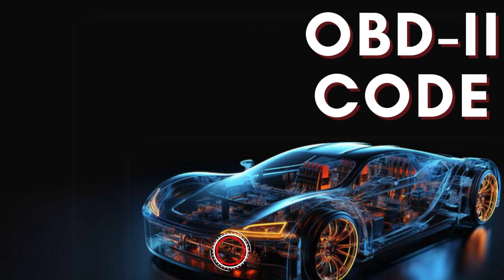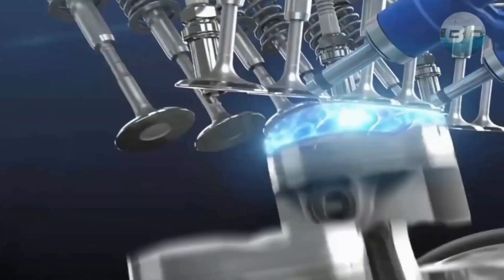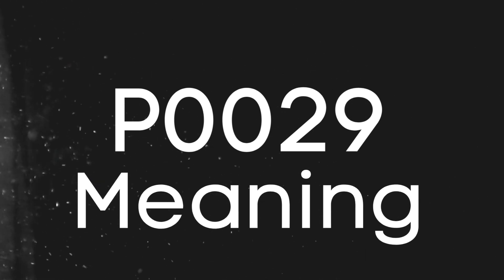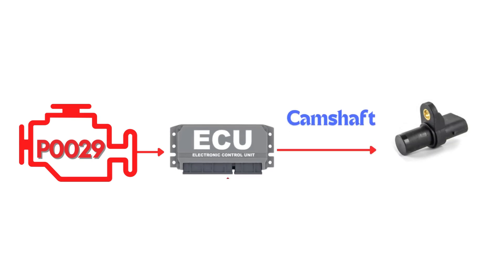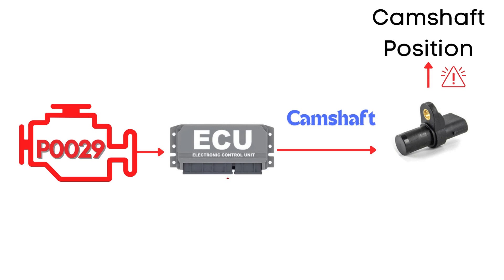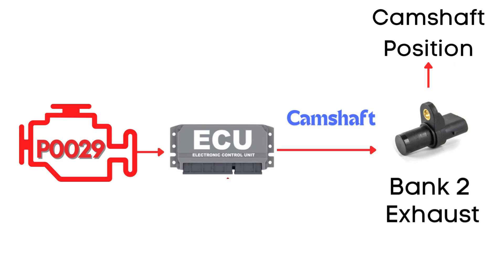Hey there! In this video, we're diving into everything you need to know about OBD-II trouble code P0029. First, let's understand what the P0029 code is. The P0029 code is triggered when the ECM detects that the actual camshaft position doesn't match the desired camshaft position. Specifically, this code points to an issue with the camshaft position actuator circuit for bank 2, referring to the exhaust camshaft.